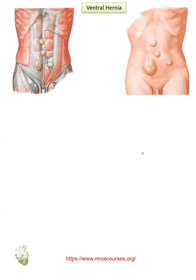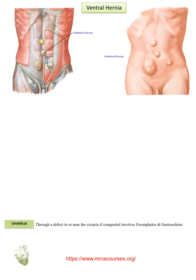So we are going to demonstrate these types. We have umbilical hernia. This is a defect near or in the cicatrix, and if congenital, it will involve omphalocele and gastroschisis. This is umbilical hernia from the layers and from outside.